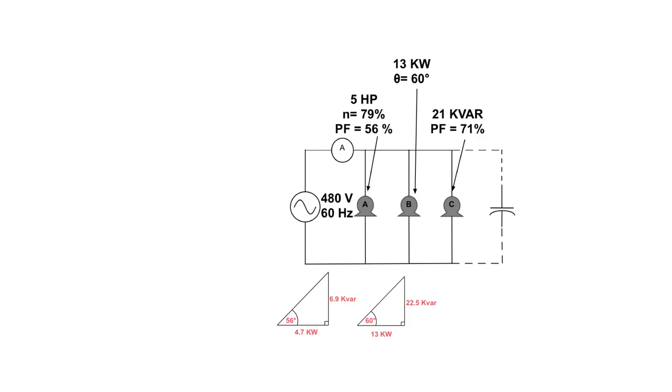Next up, we build another triangle for motor B. We do know that we have 13 kilowatts on the bottom. We do know that we have 60 degrees as an angle. Again, using tangent, we can calculate out that the reactive Vars are 22.5 kVar.